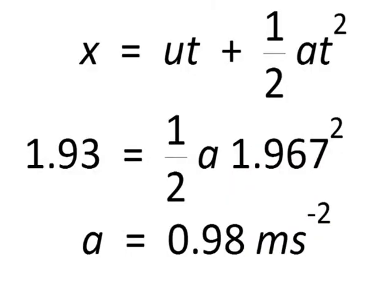The cart starts from rest and moves 1.93 meters down the slope. We measured the time for this motion. The average of 6 times was 1.976 seconds.